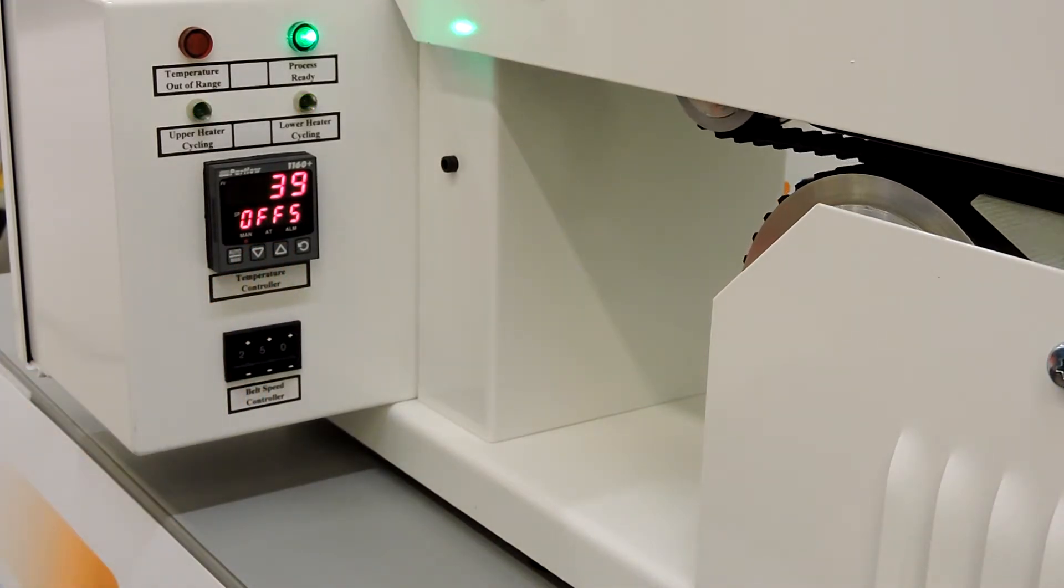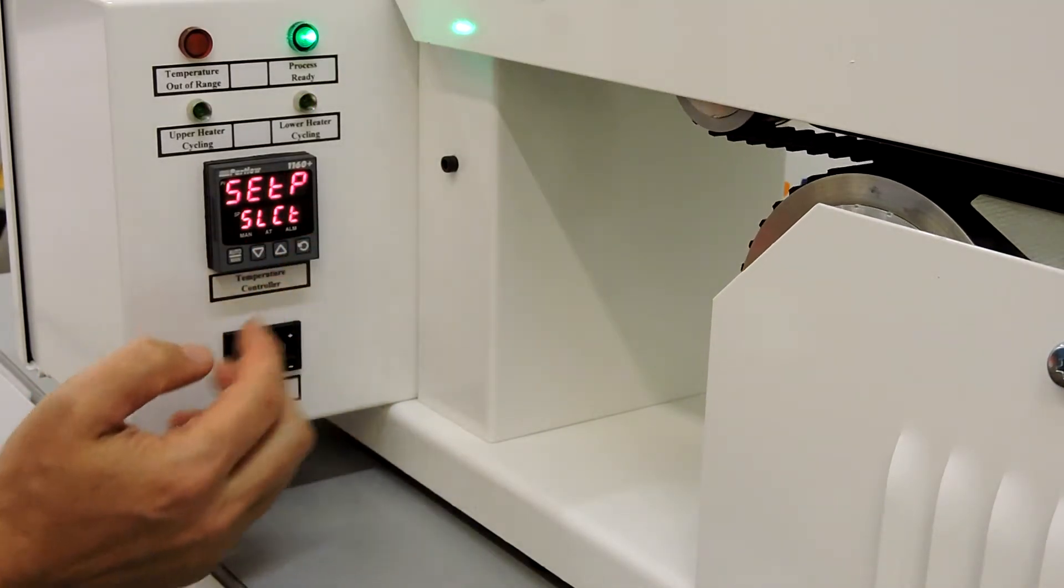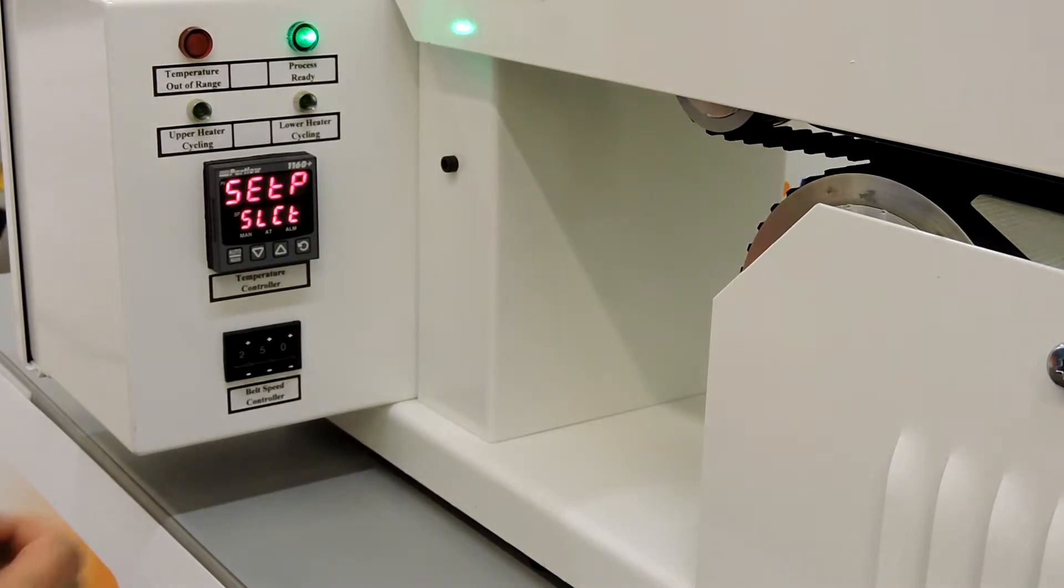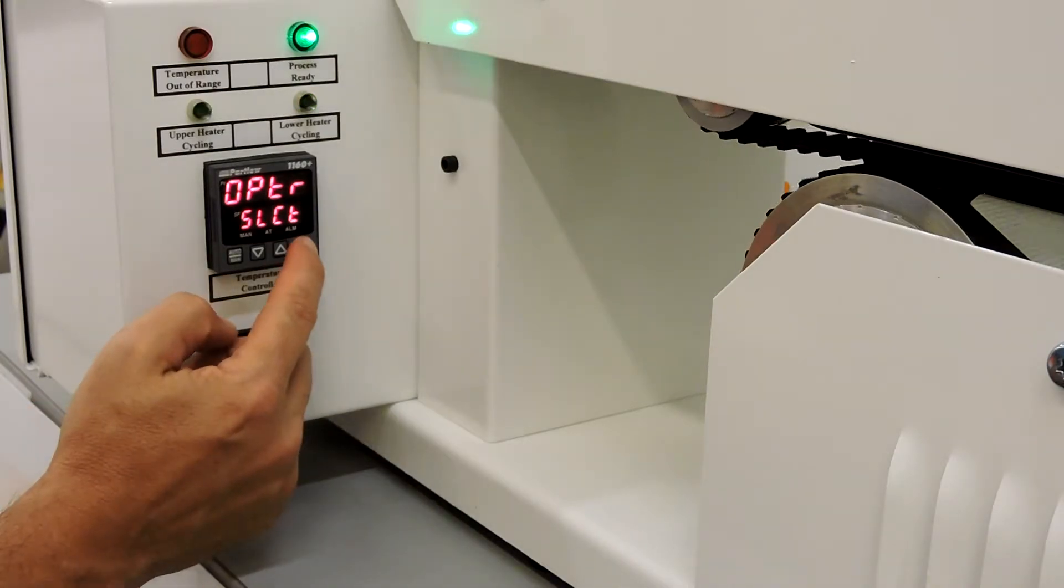Once the offset is adjusted, press and hold the scroll key while pressing the up arrow key to display the setup mode. Press the down arrow key once to display the operator mode. Press the scroll key once to exit the program.